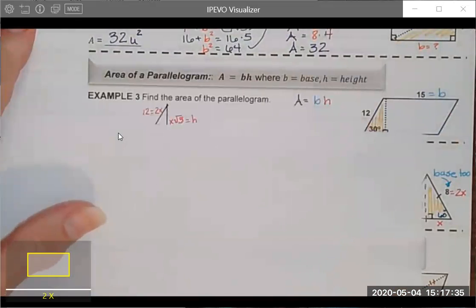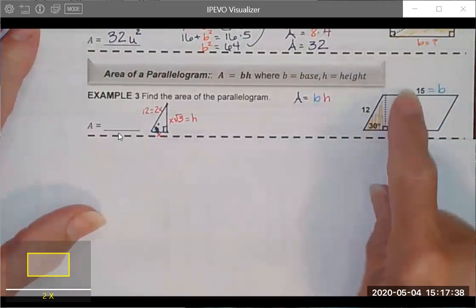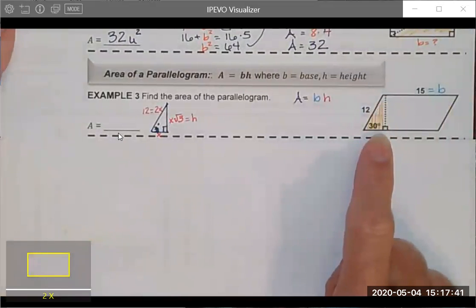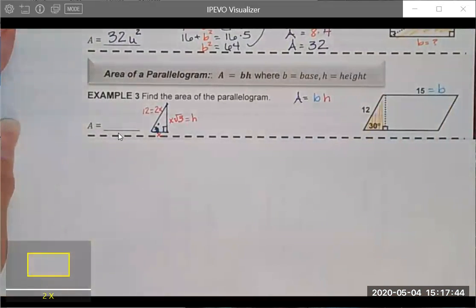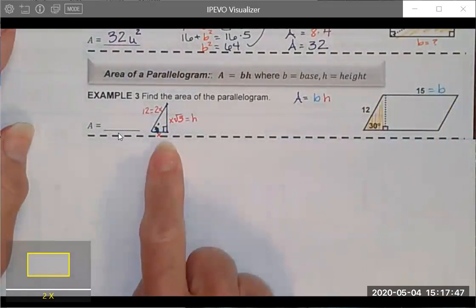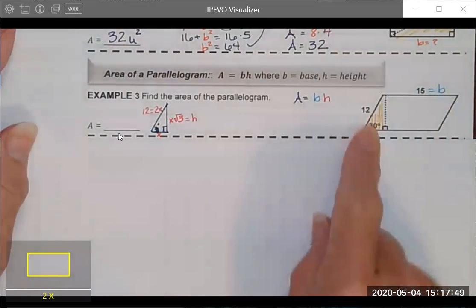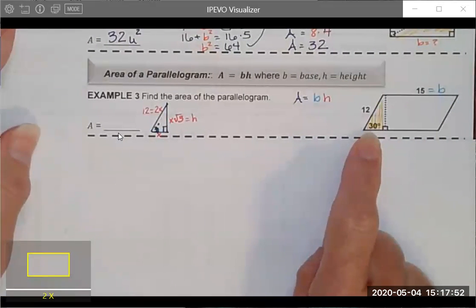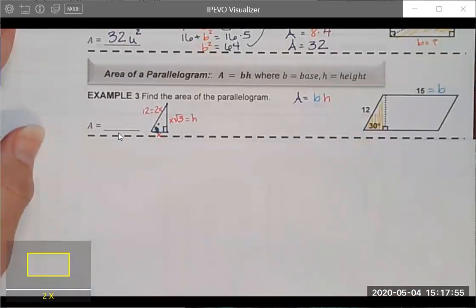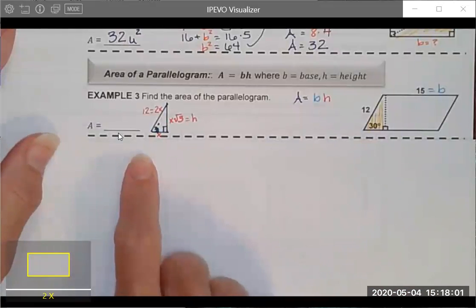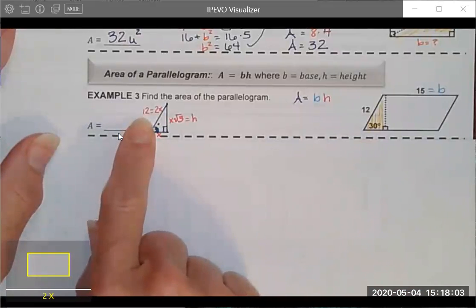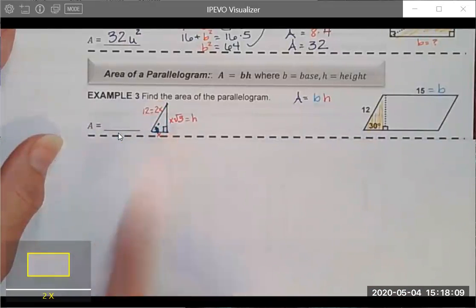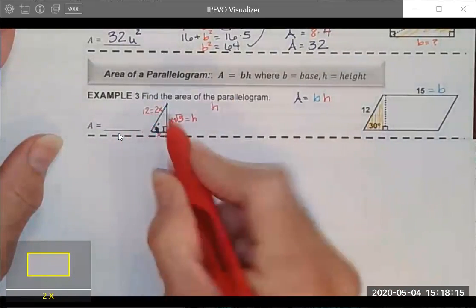The formula is the same as a rectangle but notice in this case while I did give you the base I did not give you the height. Instead I gave you this slanted part which cannot be used as height. So what I'm going to have to do in this case is I'm going to have to recognize that this is a 30-60-90 right triangle and I drew it over here because you know me I like pictures. When I recognize this is a 30-60-90 special right triangle I see that there is a relationship between that slant side of the right or the hypotenuse of the right triangle, the short leg and the long leg.